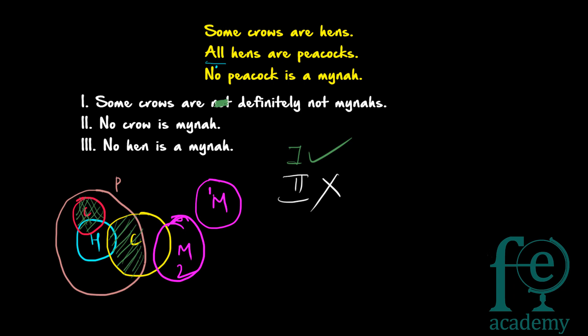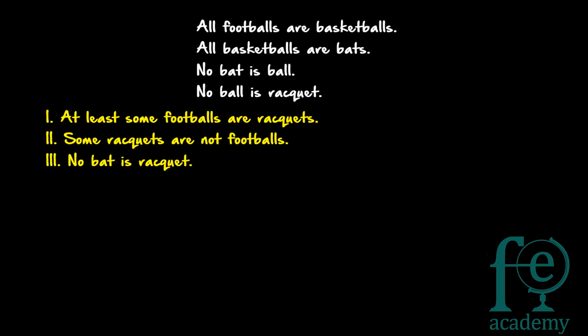Now conclusion 3: no hen is a mina. Hen is represented in only one way here, and hen is not overlapping with mina. So conclusion 3 also follows. Therefore, conclusion 1 and conclusion 3 follow.